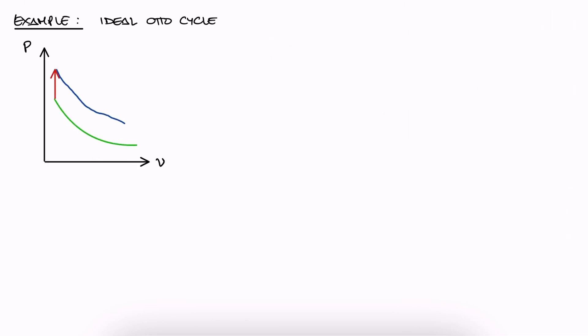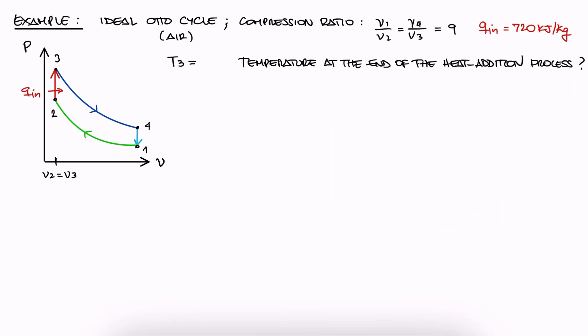An ideal Otto cycle has a compression ratio of 9. During the constant volume heat addition process, 720 kilojoules per kilogram of heat are added to the air. What is the temperature at the end of the heat addition process, if the temperature is 300K at the beginning of the compression process? Pause here and try solving this problem yourself before watching the solution.